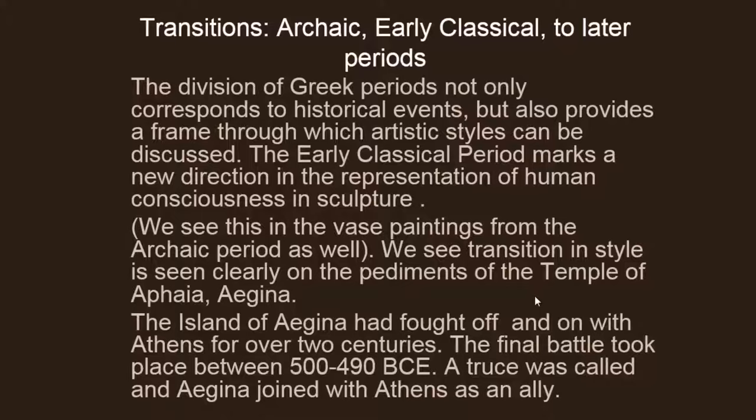This division of periods corresponds to historical events and is a frame through which we can discuss artistic styles. In early classical we see a new direction in the representation of human consciousness. I have a separate presentation just on vase paintings — it's easier to understand all together, so you will be seeing that. We're going to see transitions in style very clearly on the pediments of the Temple of Aphaia in Aegina, which is why I'll concentrate on that temple now.